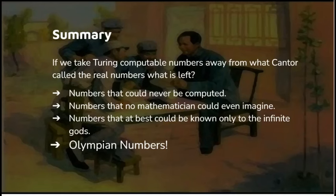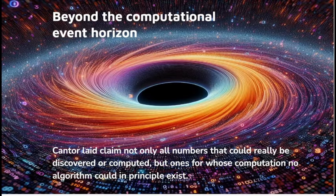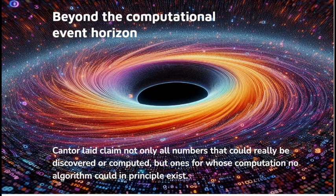So if we take the Turing computable numbers away from Cantor's real numbers, what's left? You're only left with numbers that could never be computed. Numbers that no mathematician could even rationally imagine. Numbers that could at best be known only to the infinite gods. The Olympian numbers. Numbers known to Zeus. Cantor wants to go beyond the computational event horizon. He's laying claim to not only all numbers that could be discovered or computed, but ones whose computation no algorithm could in principle exist for.